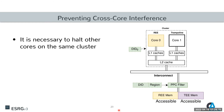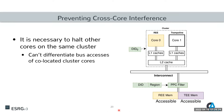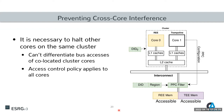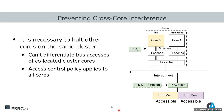The second issue is that we cannot differentiate between bus accesses of co-located cluster cores, meaning the access control policy applies to all cores equally. For example, with two cores — one running the rich environment and one executing the Trampoline entering a zone — if we configure the PPC to block normal world memory, the core still running the normal world will also be blocked from accessing its own memory. Therefore, the Trampoline must suspend all other cores in the cluster before safely reconfiguring the PPC and proceeding with execution.